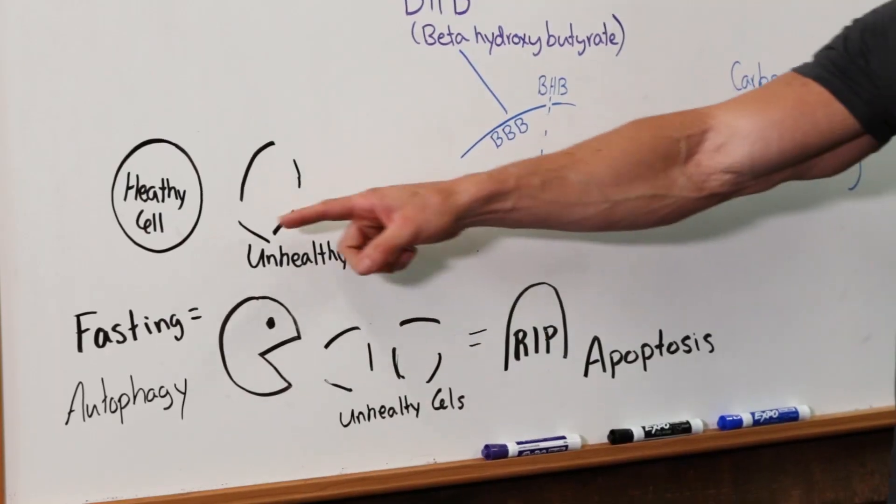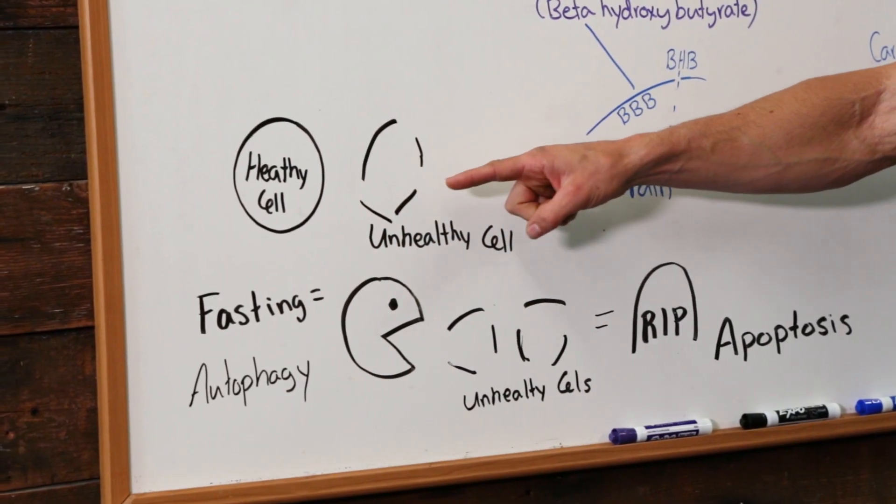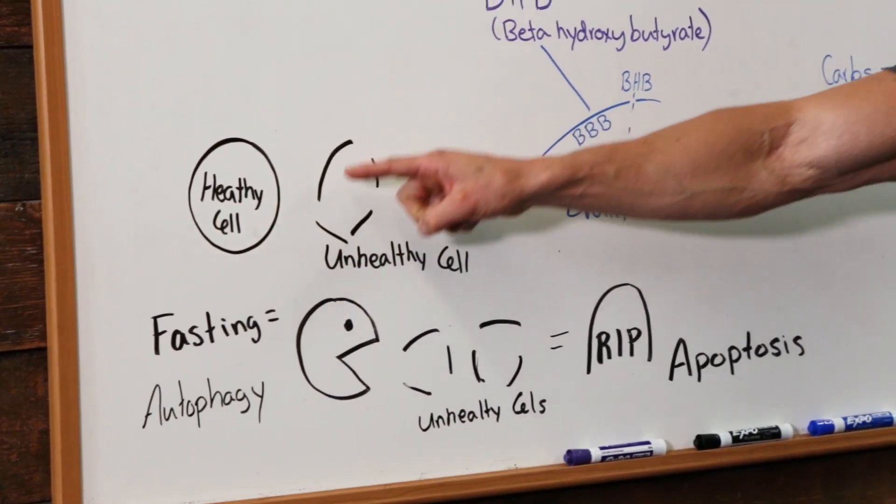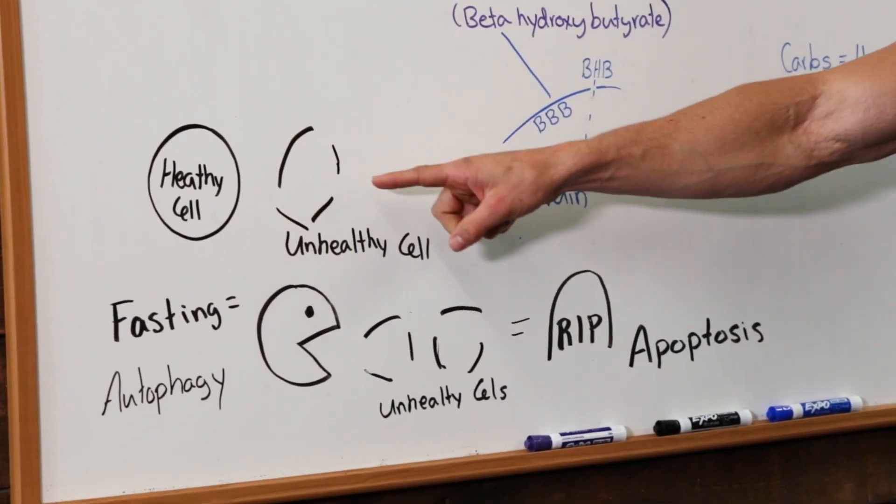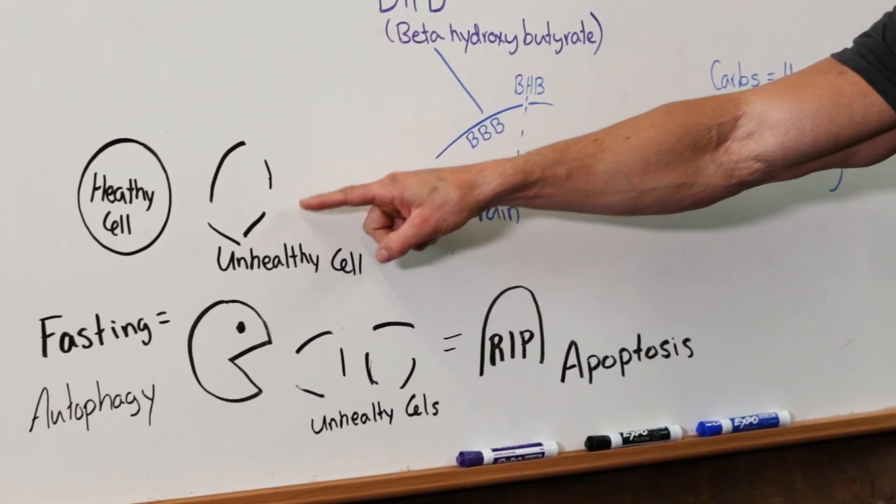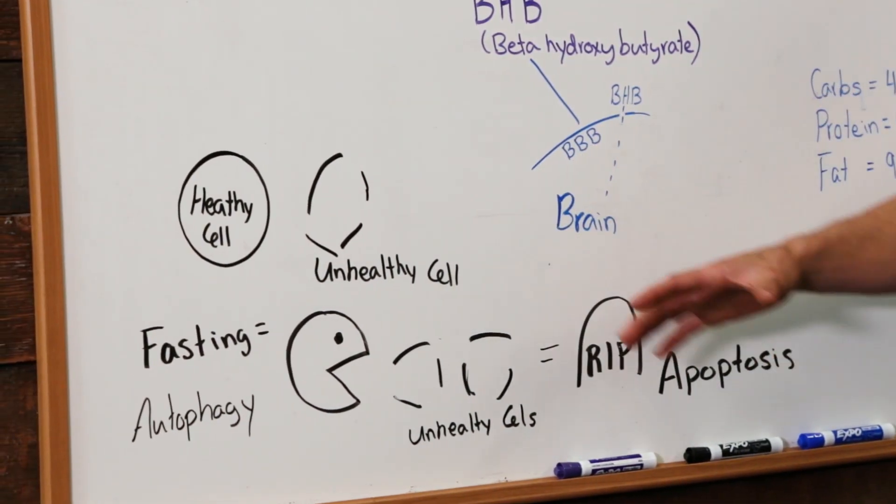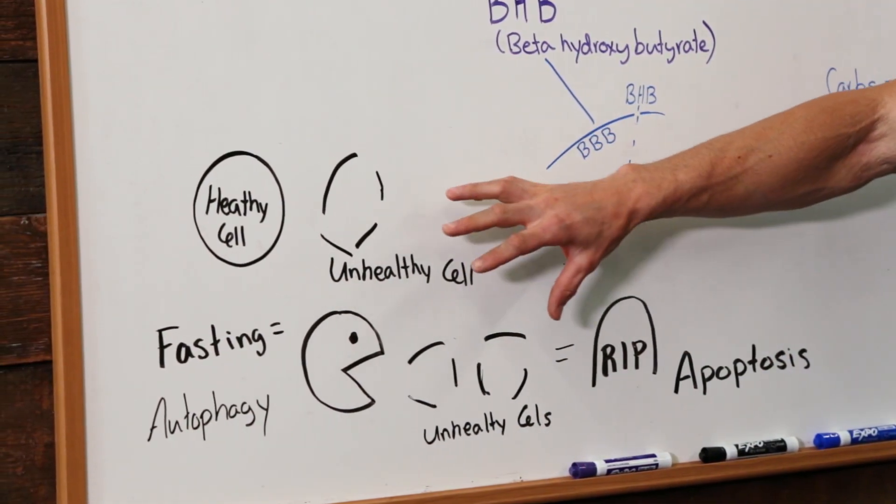And basically what it is, is where your cells start to eat wasteful parts of your cells that they don't need. So here's a healthy cell. Here's an unhealthy cell. You see how the healthy cell is fully complete, nice and spherical. This one is deformed and it has an incomplete membrane. It has an incomplete shell. Basically, that's an unhealthy cell.